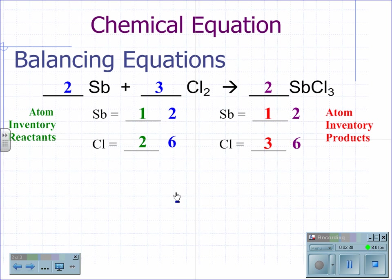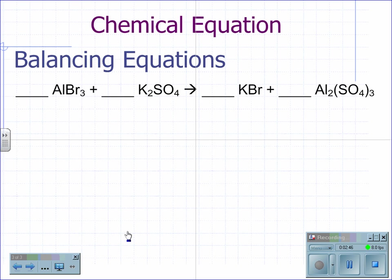Now we have two antimony and six chlorine on the reactant side, and two antimony and six chlorine on the product side. The balanced chemical equation is 2Sb + 3Cl₂ → 2SbCl₃.